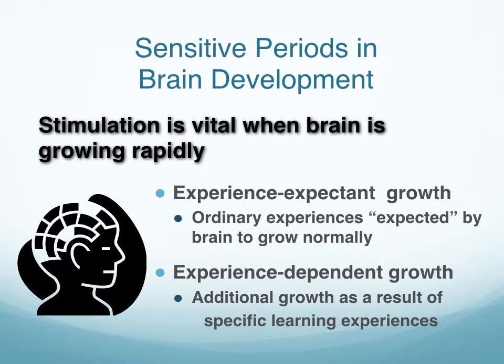There are two different types of growth in this context. The first is experience-expectant growth — growth that occurs in response to ordinary experiences that most of us are expected to encounter: exposure to light, sound, and physical touch. Those are ordinary experiences that still affect brain development, and if they didn't occur for some reason, that would have a negative impact. The brain is designed to expect these kinds of experiences and use them for growth.